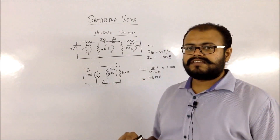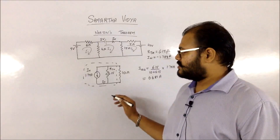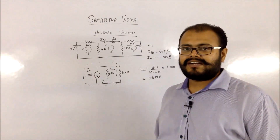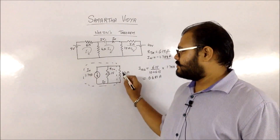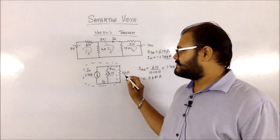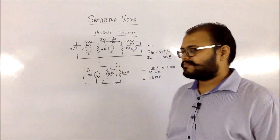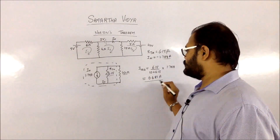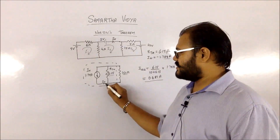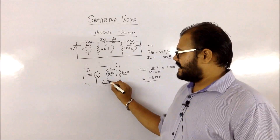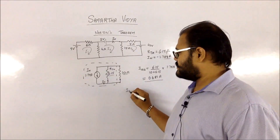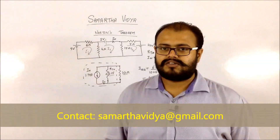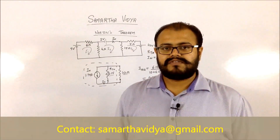You also add the resistance Rth in parallel with this current source, and then reconnect the 10 ohm resistance across which we need to find the current. Taking IN as the total current entering the parallel branches, you apply the current divider rule. To find the current through the 10 ohm resistor, it is the opposite resistance divided by the total resistance, multiplied by the total current: 6.15 divided by 16.15 multiplied by 1.788, which gives you 0.681 amperes. So your I through the 10 ohm resistor is 0.681 amperes.